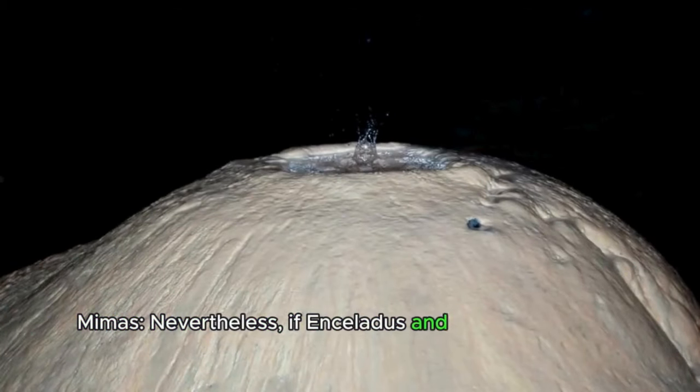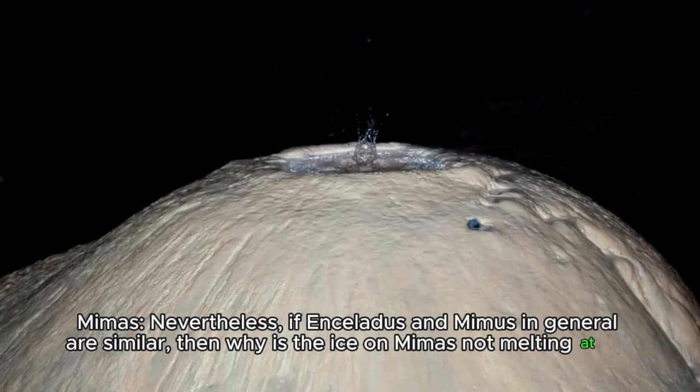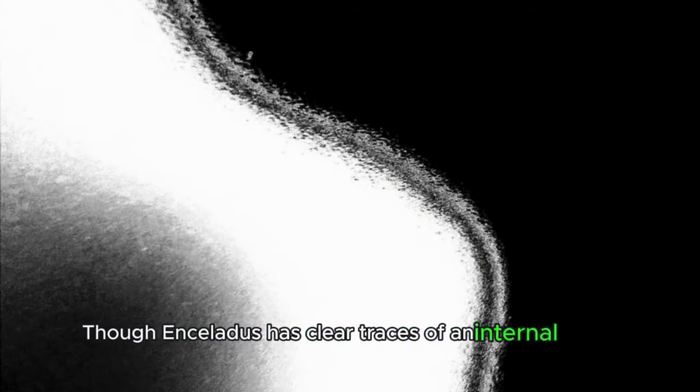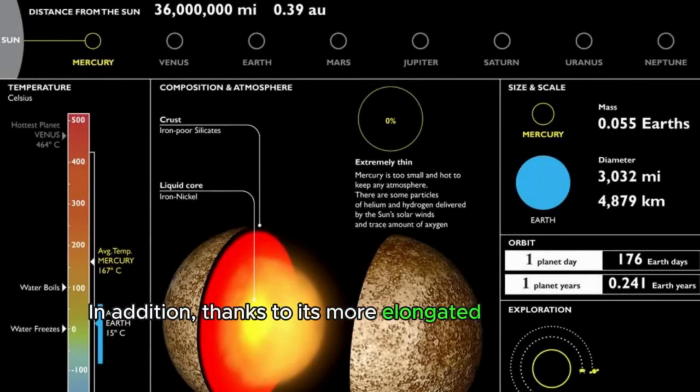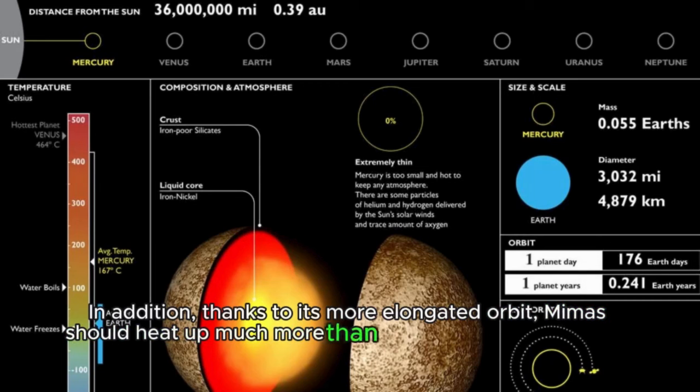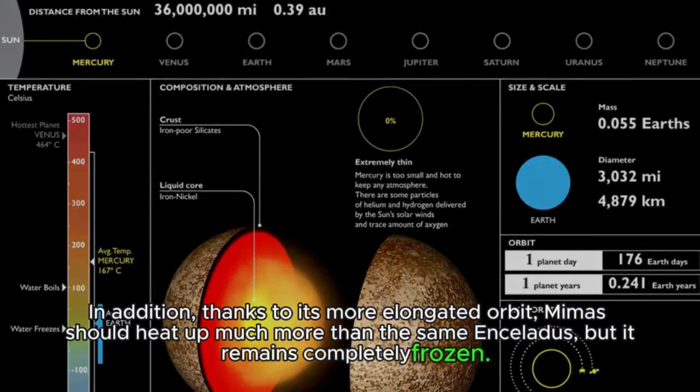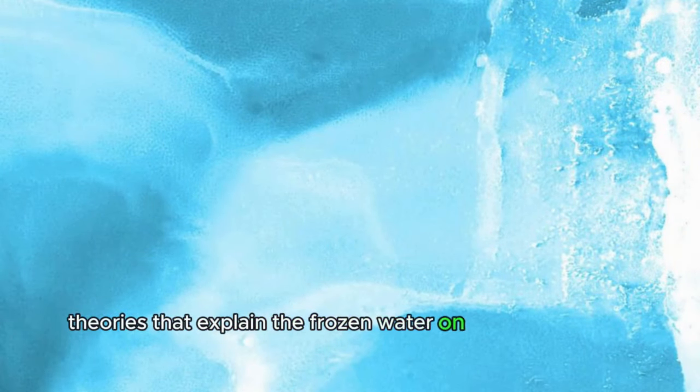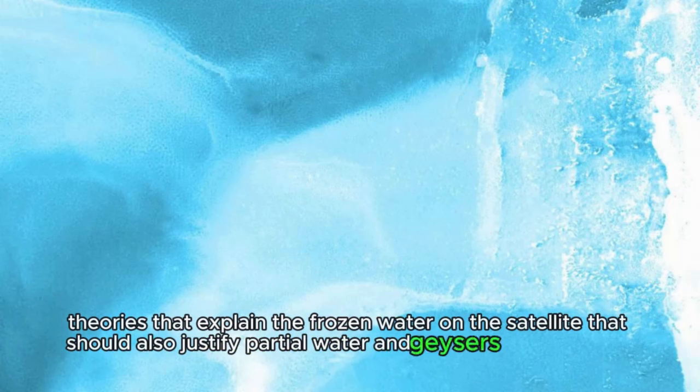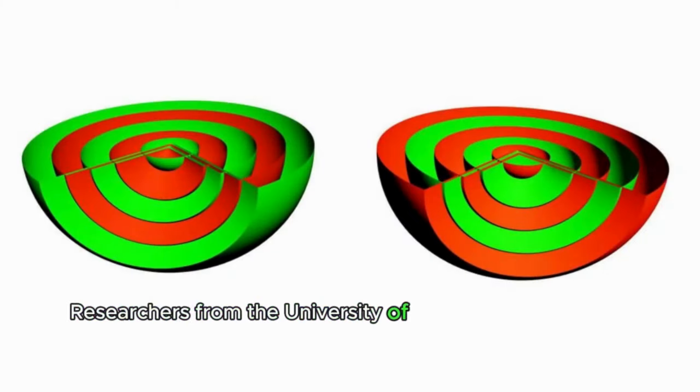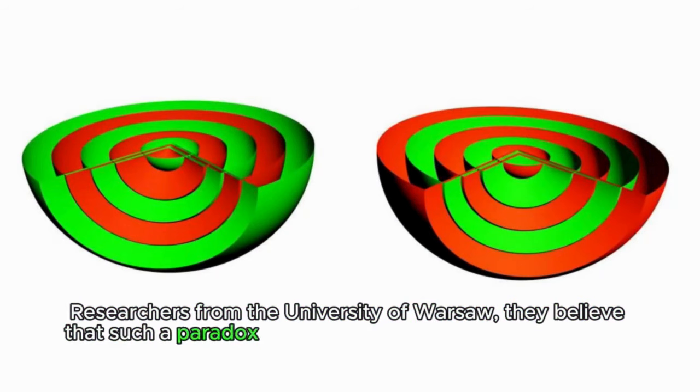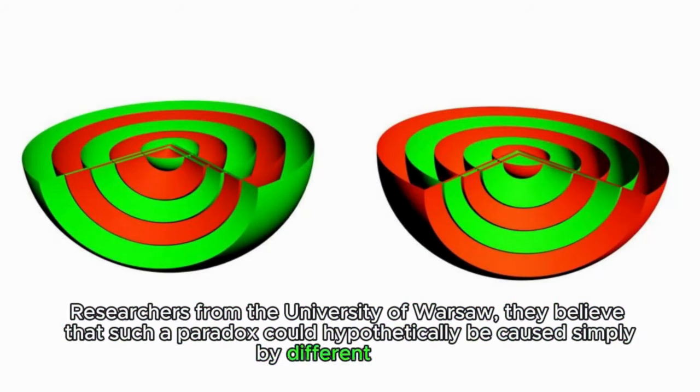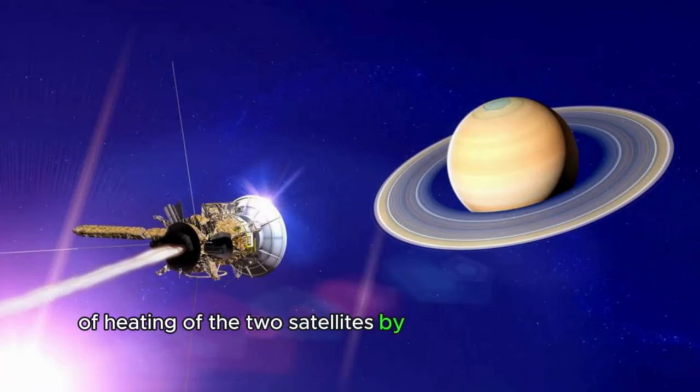Nevertheless, if Enceladus and Mimas in general are similar, then why is the ice on Mimas not melting at all? Though Enceladus has clear traces of an internal ocean. In addition, thanks to its more elongated orbit, Mimas should heat up much more than the same Enceladus, but it remains completely frozen. This temperature weirdness has led NASA scientists to even come up with cases to test theories that explain the frozen water on the satellite that should also justify partial water and geysers on Enceladus.